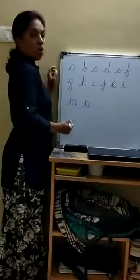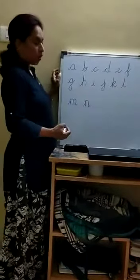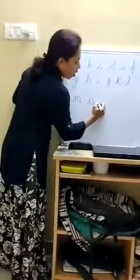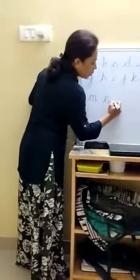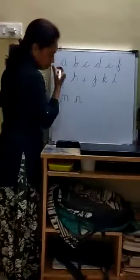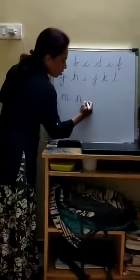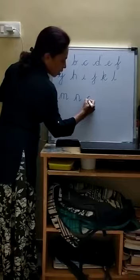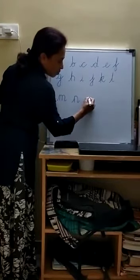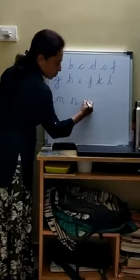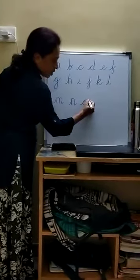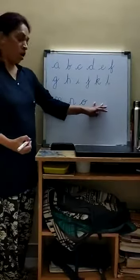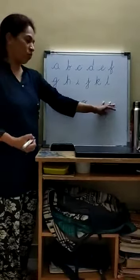Okay, now O. Name of the letter is O. Sound of the letter is O. How to write? In between the second and third line, take a tail, curve, come back to the third line, complete the circle, and leave with a tail. O. On. O. Off.